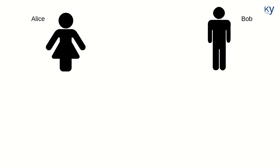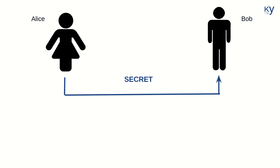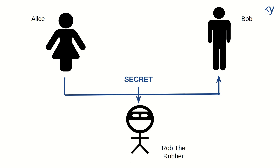So what you have to imagine is there are two people: Alice and Bob. Alice wants to send a message to Bob — let's call it 'secret' for lack of better ideas, but for all we care, it could be a bank password that she is sharing with Bob. Now Rob the Robber can easily tap that communication and see the secret message that Alice is trying to send to Bob.